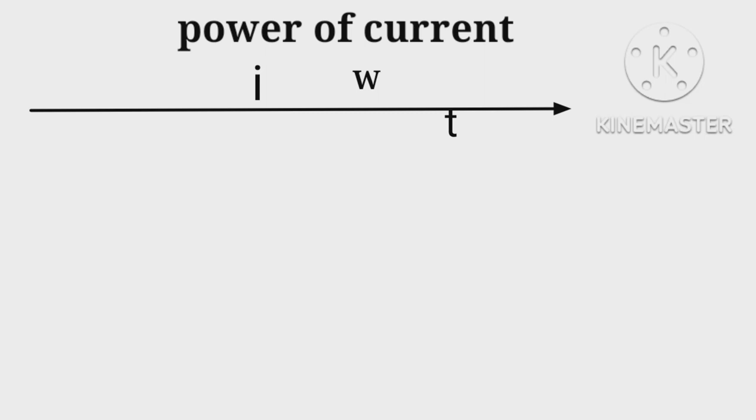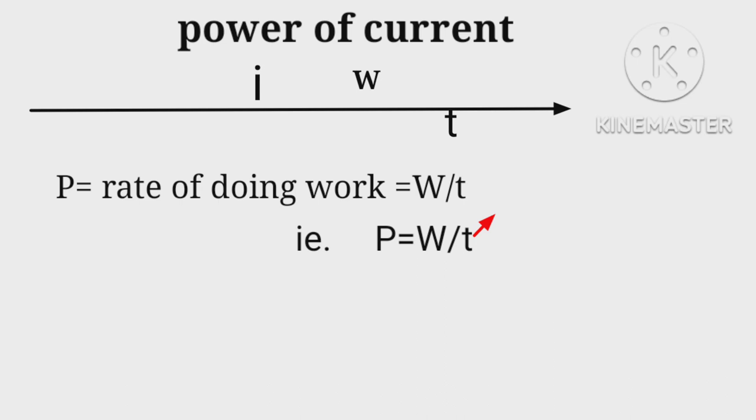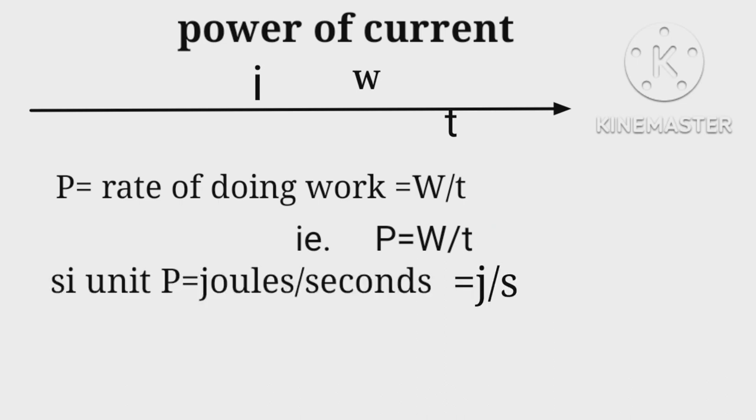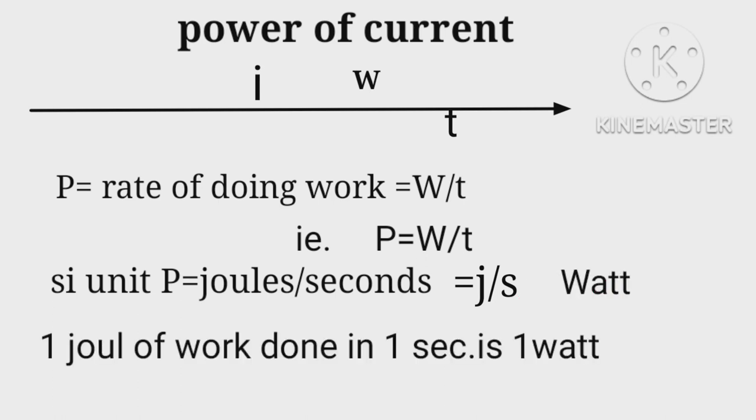So power is defined as rate of doing work, that is P equals W upon t. SI unit of power equals joules upon second, one word substitution as watt. One joule of work done in one second is called one watt. One horsepower equals 746 watt.